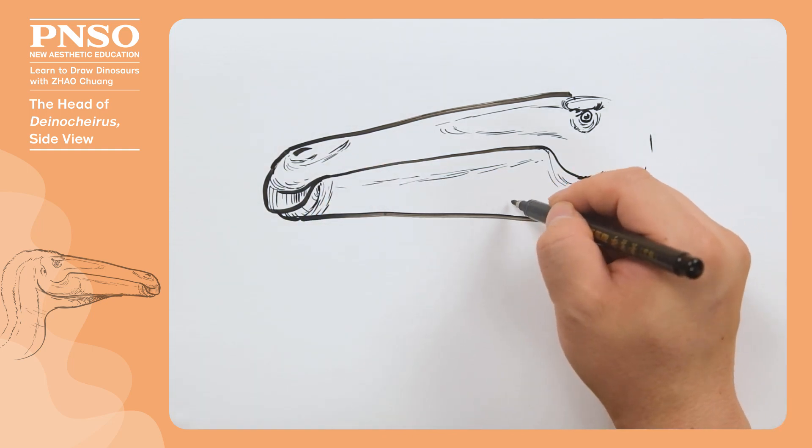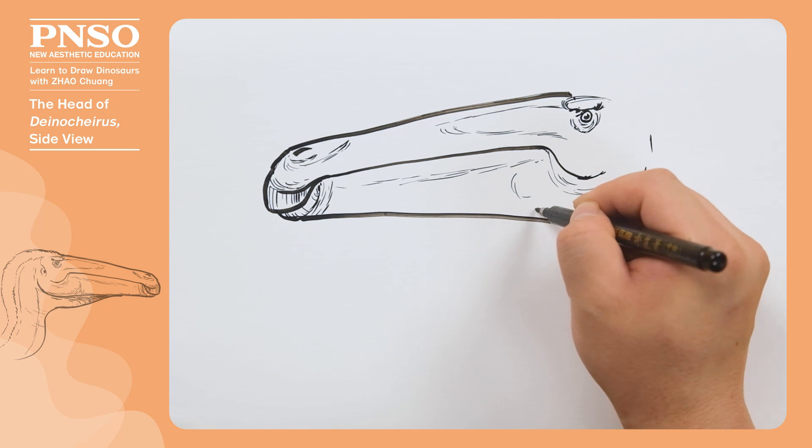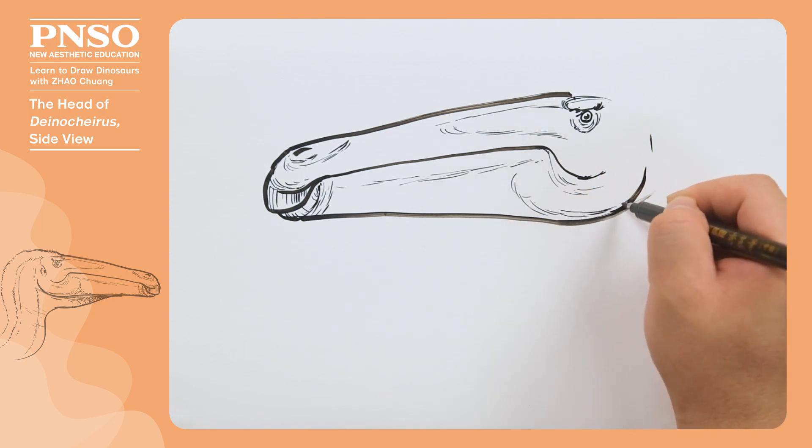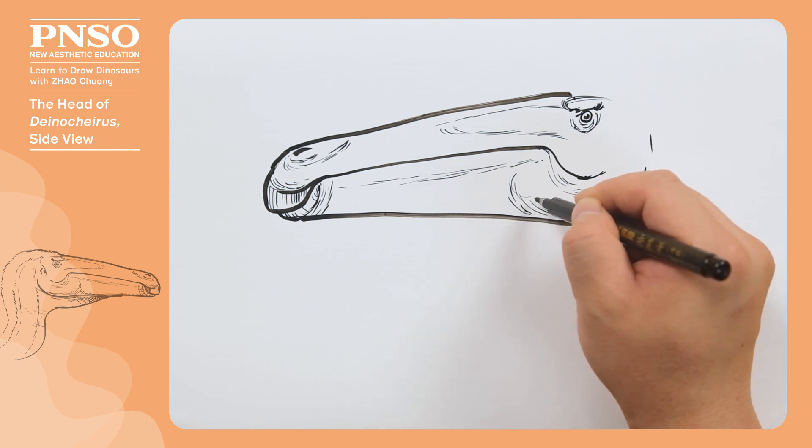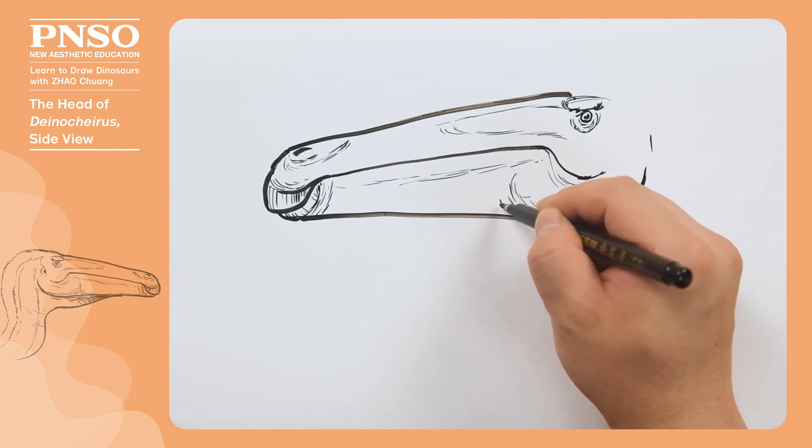Draw some muscles at the rear of the face, since it was thicker here. Use these dotted lines to draw the muscles.